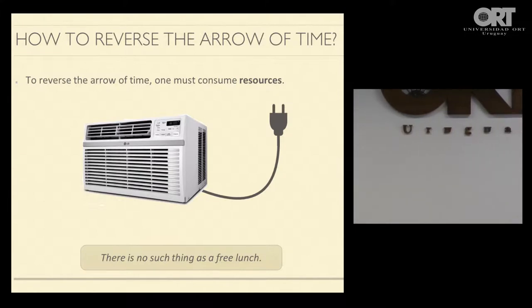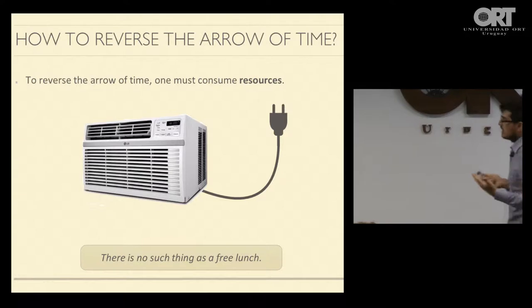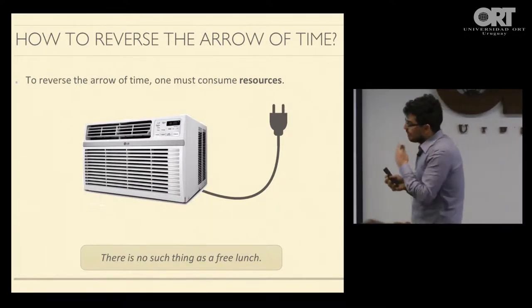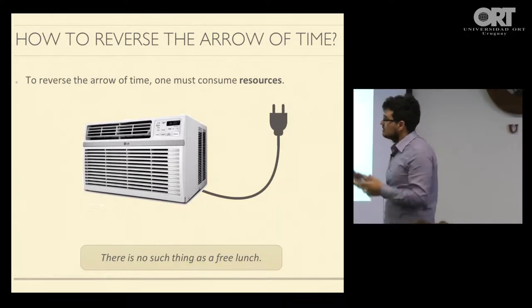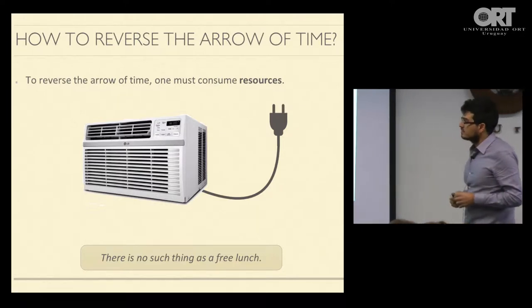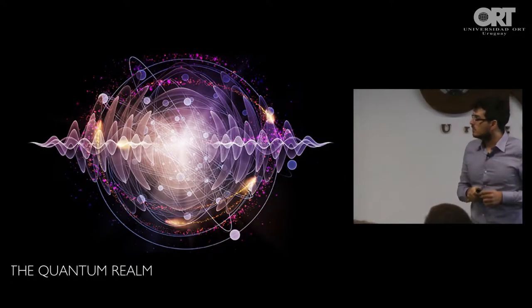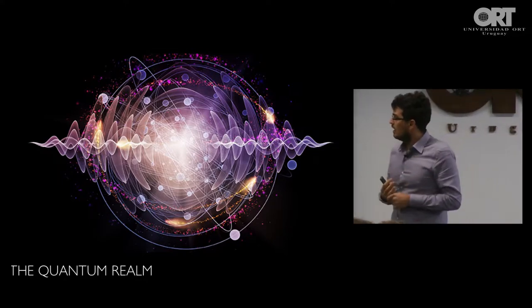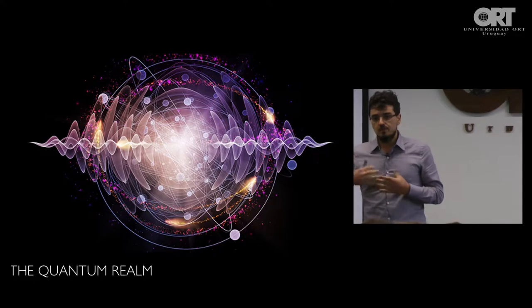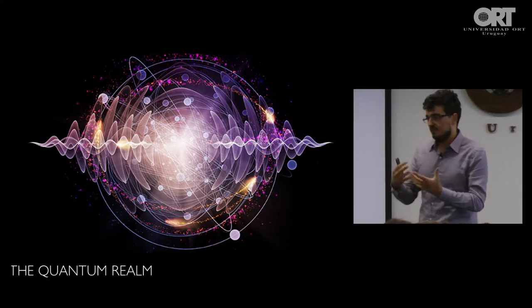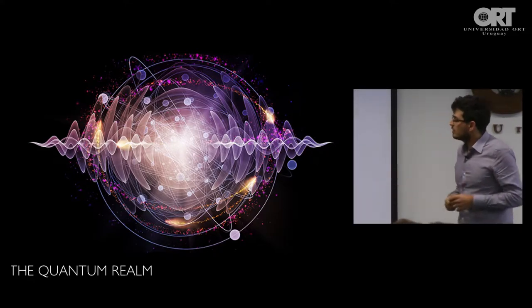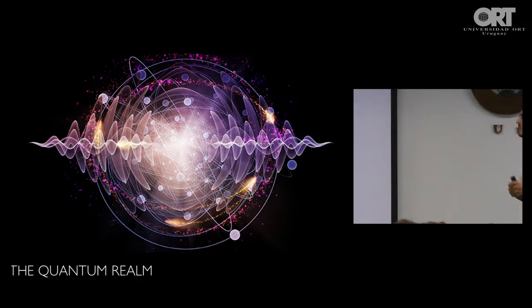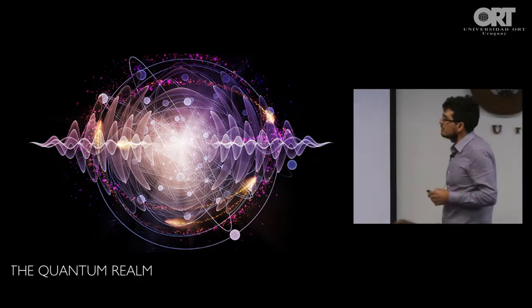So can we reverse the arrow of time? Yeah, we do that all the time. Refrigerator air conditioning does exactly that. The arrow of time tells you that heat goes from hot to cold, but when you have air conditioning, it's taking heat from cold to hot. You can reverse the arrow of time, but you have to pay a price. We have to consume a resource. You have to use a fuel. So the message is that there is no free lunch. If you want to do something which is violating the arrow of time, you need to pay a price.